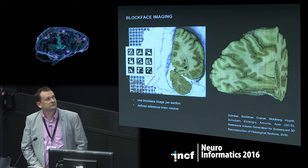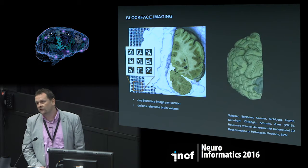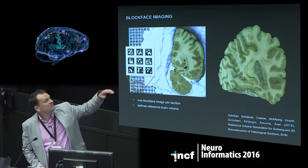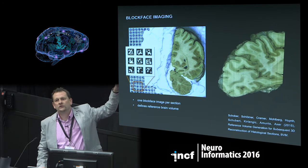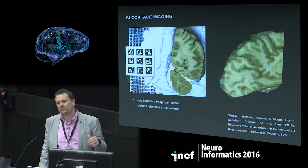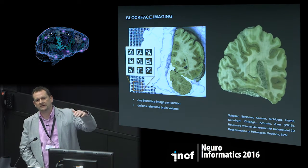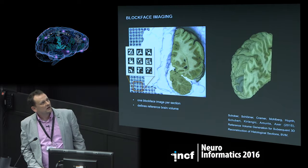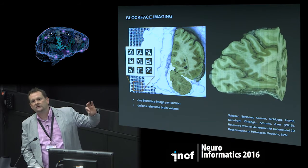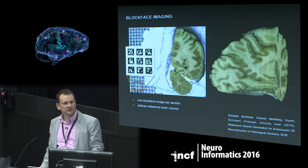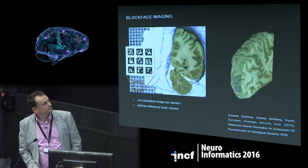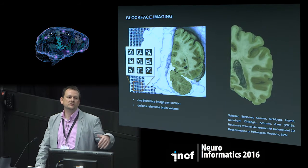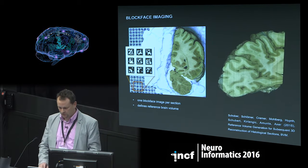During the sectioning process we take so-called block face images. You see on the left hand side one of these images — there is a barcode in the background which allows us to very precisely reconstruct later all the single block face images for each section. The result is shown on the right side. Pixel or voxel sizes are in the order of 60 by 60 by 60 micron, and we use this dataset as a reference to later reconstruct the deformed sections measured by polarized light imaging.